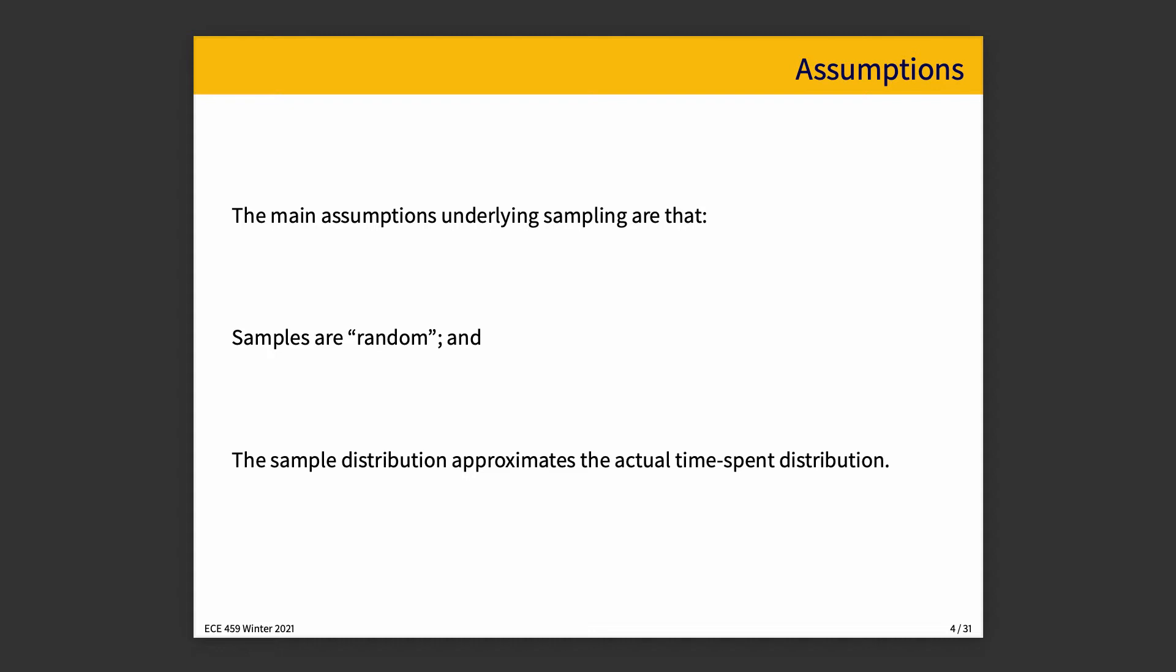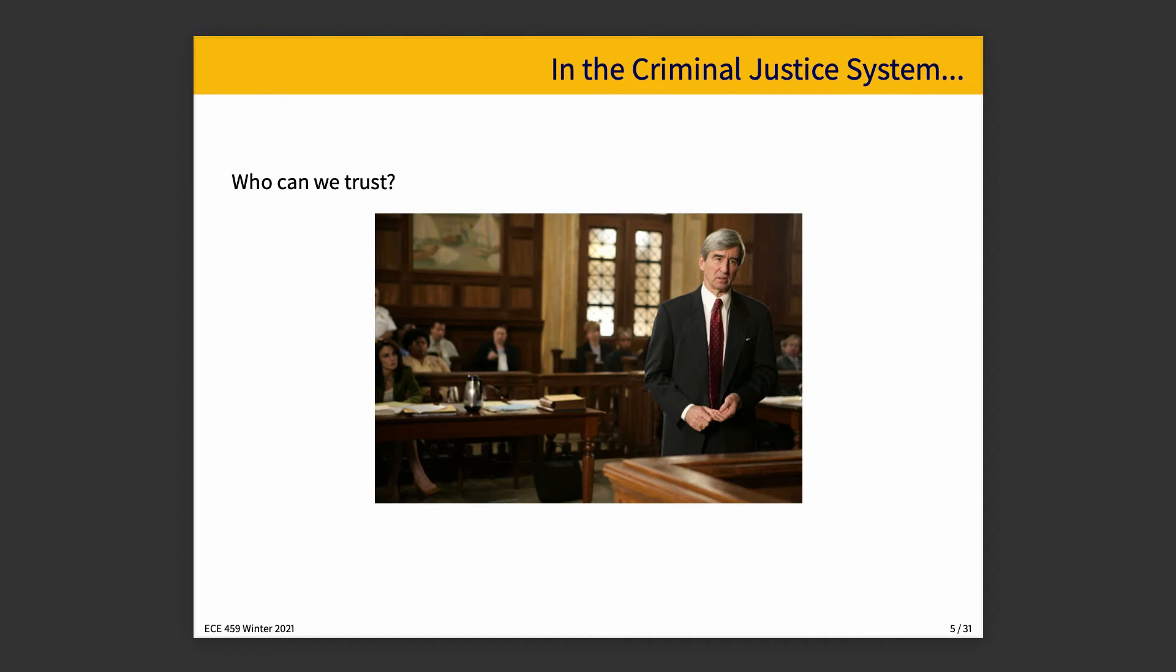So the main assumptions underlying sampling are that samples are random, random in quotation marks, and number two, that the sample distribution approximates the actual time spent distribution. That is, we get a representative sample of the data that we are sampling.